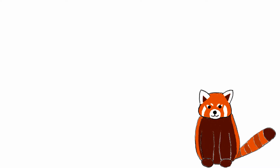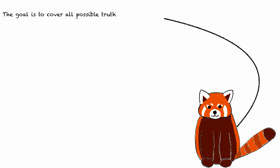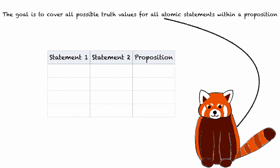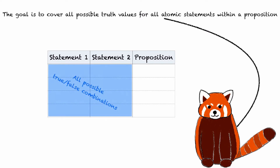Let's first see an example truth table in order to understand the idea. The aim is to look at all possible combinations of truth values for different propositions. In this example, there are two atomic statements — statement one and statement two — as well as a proposition consisting of some logical combination of the two. The blue area covers all possible true/false combinations of the atomic statements, and the orange area shows the resulting truth value. For two atomic statements, there will be four cases.